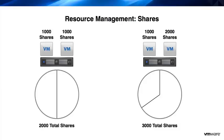We want to make sure the production VM gets the majority of the CPU resources when there is contention for those resources in the environment. Changing the shares for the production VM from 1000 to 2000 accomplishes this goal, as shown on the right side of this illustration.